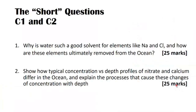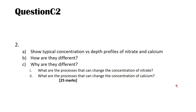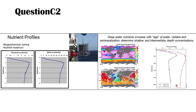Moving on to question two: show how typical concentration versus depth profiles of nitrate and calcium differ in the ocean and explain the processes that cause these concentration changes with depth. Decoding this: you need to draw a profile of nitrate concentration with depth and a profile of calcium concentration with depth, describe how they are similar or different, and then describe the processes causing those concentration changes down the water column.